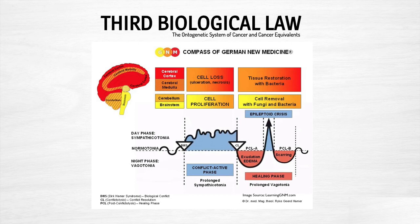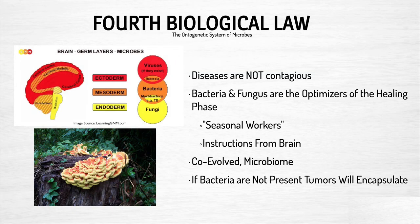The third biological law has been displayed all throughout our discussion of the dermis. The dermis, controlled from the cerebellum — that old mesodermal tissue — has cell proliferation as its program during conflict activity, and after the conflict is over, there is cell removal with fungi and bacteria. Every single disease, disorder, or dysfunction that we call it was actually a special biological program. They all follow this model. There is no randomness — it's a very systematic way of understanding what is going on in the body. The fourth biological law was seen at play with the candida and different fungi and bacteria that break down the additional cells built up during conflict activity. If they are not present, the tumors will encapsulate.